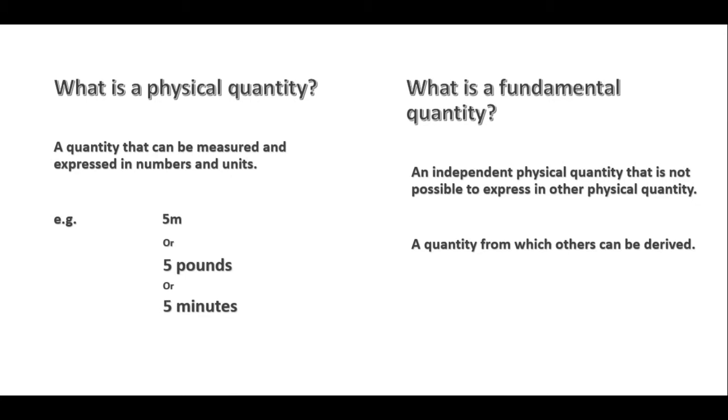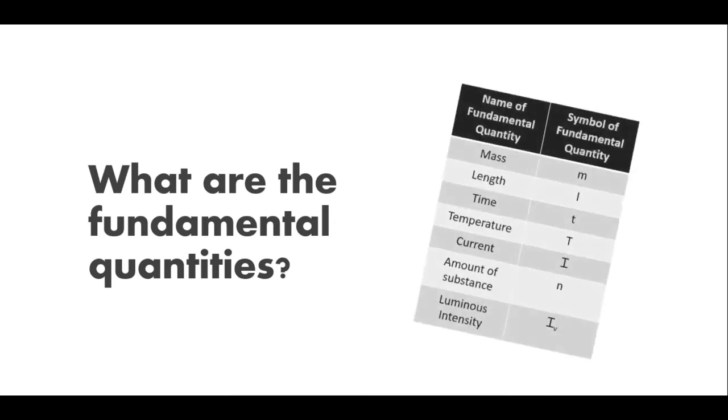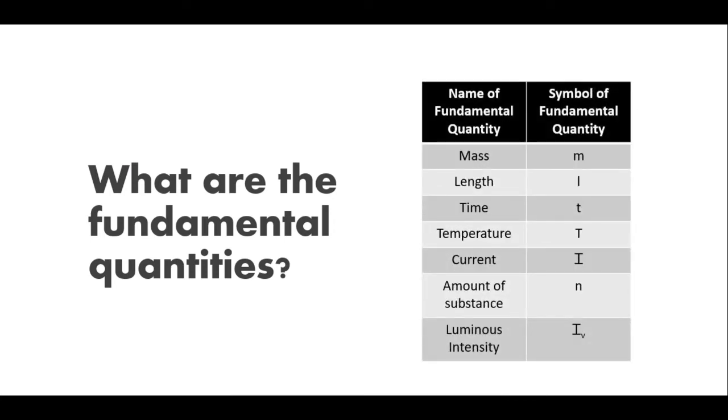So what are the fundamental quantities? There are seven fundamental quantities in physics. You'll see a table here where we have name of fundamental quantity and the symbol of the fundamental quantity. We have mass, expressed with M. Length, we use L, just like when we say the area of a rectangle length by breadth. Time, which we use a lowercase or common T. Temperature, a capital T because we don't want confusion where you have two lowercase Ts and you're wondering does this mean time or temperature.